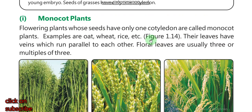The flowering plants are of two types: monocot plants and dicot plants. Monocot plants have leaves with veins that run parallel to each other.